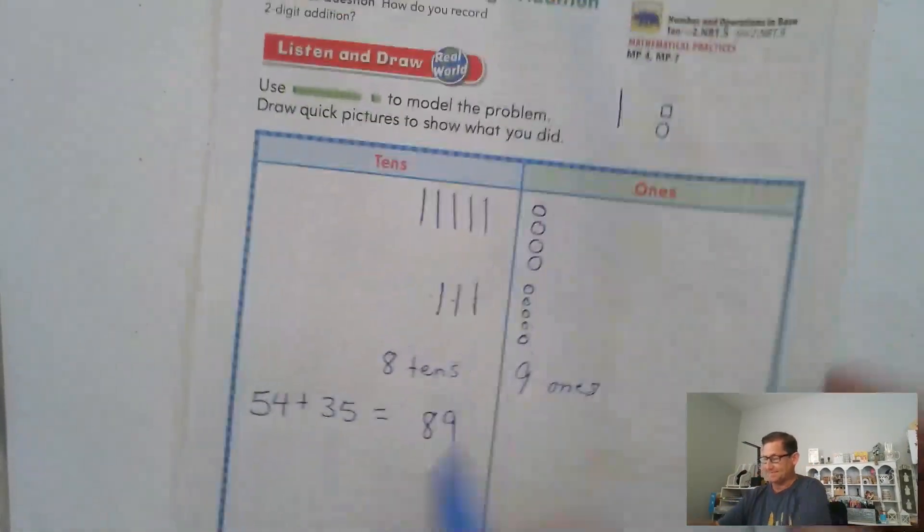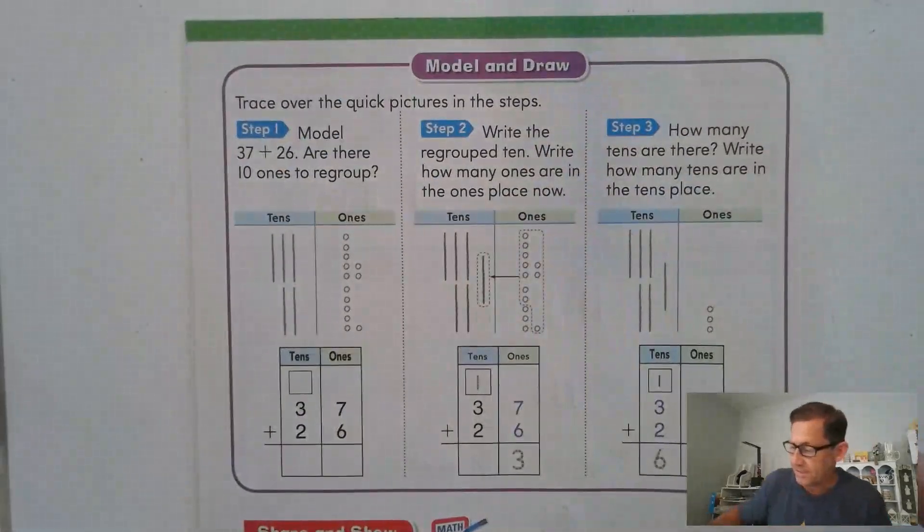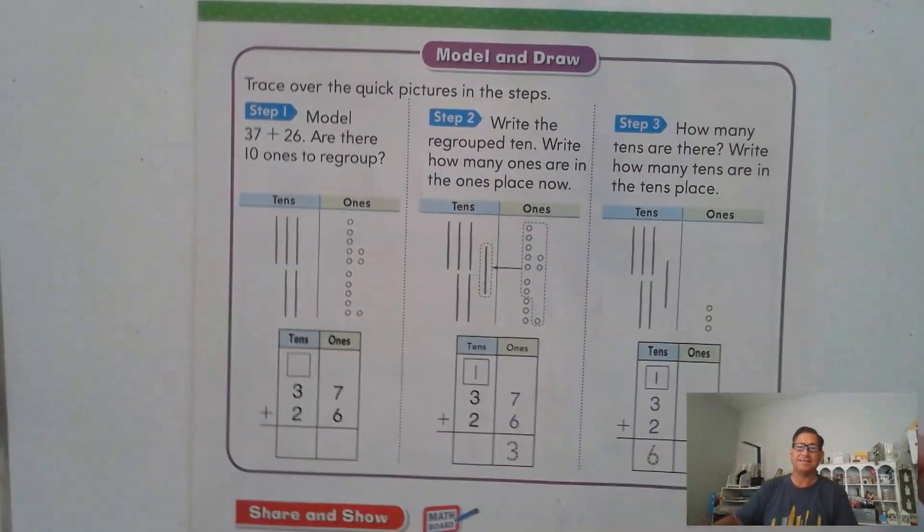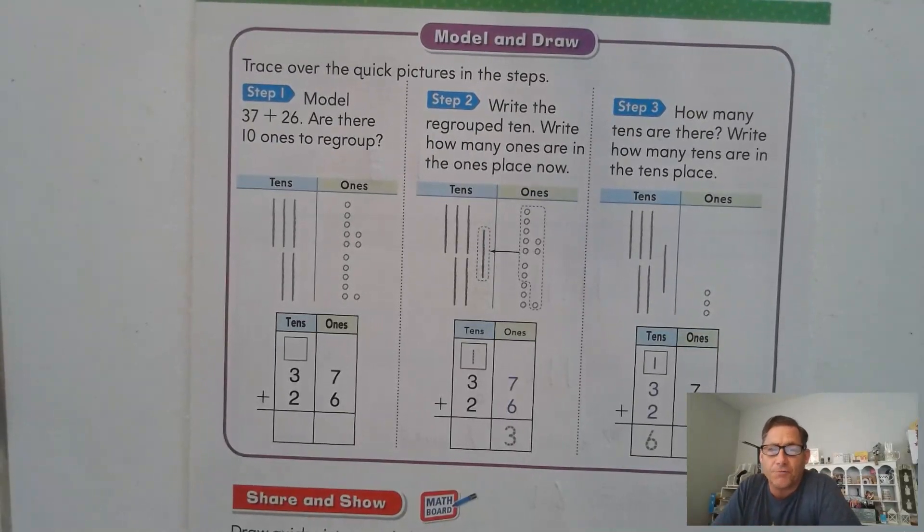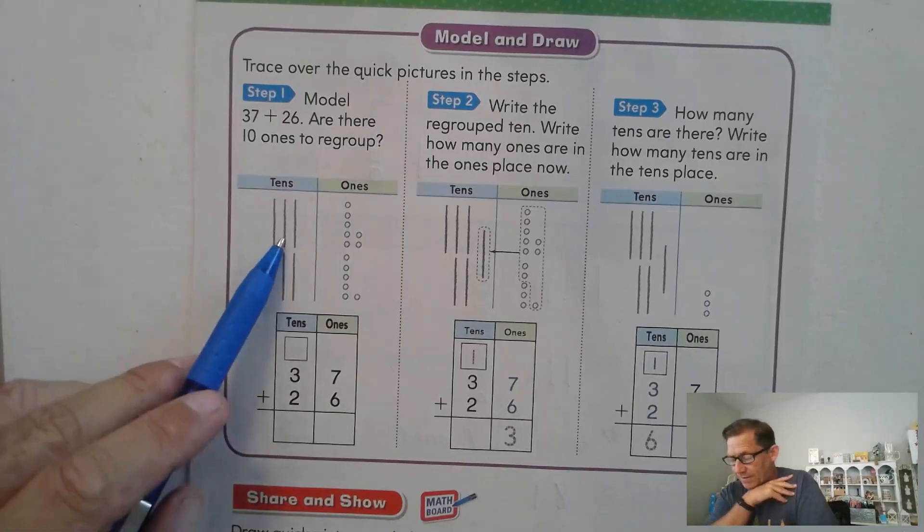Let's look at page 190. Trace over the quick pictures in the steps. So step one, we're going to model 37 plus 26. And we need to ask ourselves as we're doing that, are there 10 ones to regroup? Because if we have more than 10 ones, we need to trade it for that same number of tens.